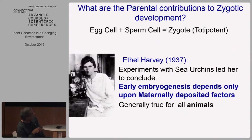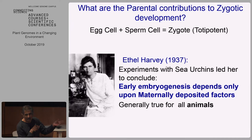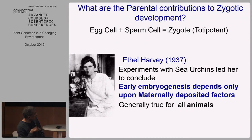A breakthrough was made by the great developmental biologist Ethel Harvey in the 1930s. She performed amazing experiments with sea urchins — she was able to remove the nucleus of a sea urchin egg and show that it could divide and make an embryo without any nucleus. This is quite astonishing. She concluded that early embryogenesis depends only upon maternally deposited factors, and her findings have been validated to be generally true for all animals.